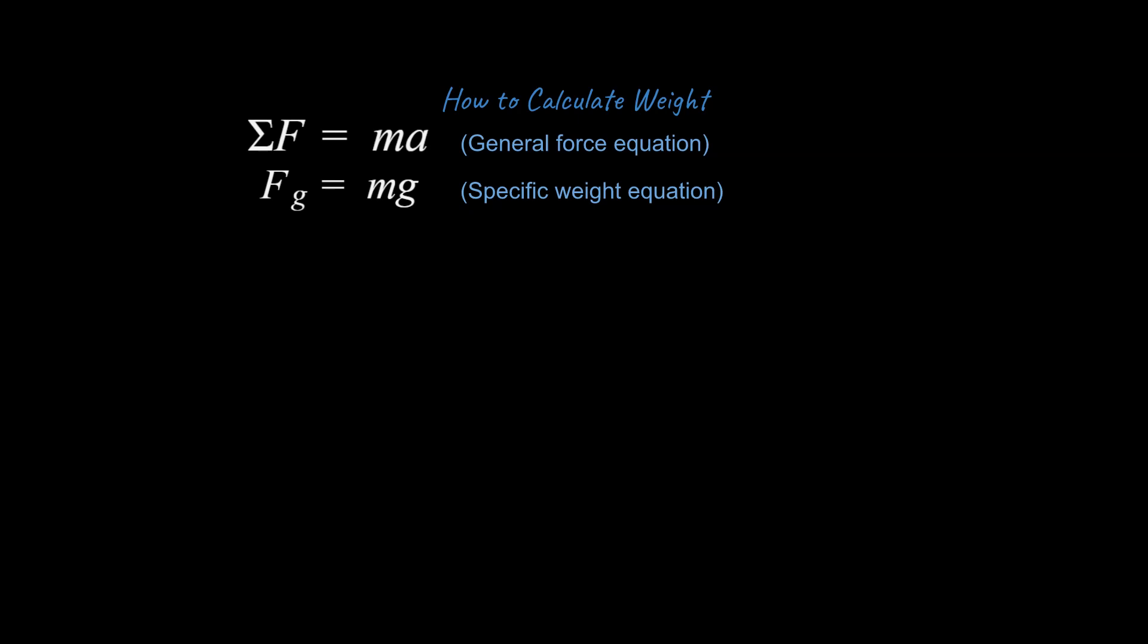I'll show you where that g value comes from later in the course, but for now we know that on or near the surface of the earth, it's 9.81 meters per second squared. This is an alternative version of this equation that you may see from time to time, just subbing out capital W for the force due to gravity. Although that is not as common, this is the most important equation to work with for weight. This topic is not tough, you just have to make sure that you know the difference.